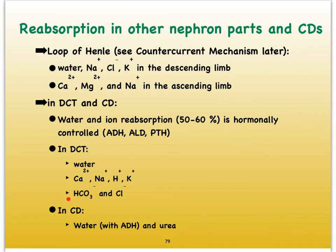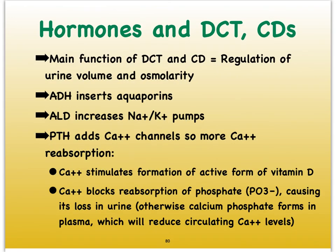In the collecting duct, we reabsorb water with the help of ADH and also urea. Reabsorption in the proximal convoluted tubule especially occurs by primary active transport, secondary active transport, osmosis of water — obligatory water reabsorption — and solvent drag of lipid-soluble substances. When we get to our distal convoluted tubules and collecting ducts, these substances cannot so easily get across the cell membrane; instead we depend on hormones binding to the tubular cells in these areas of the nephron.